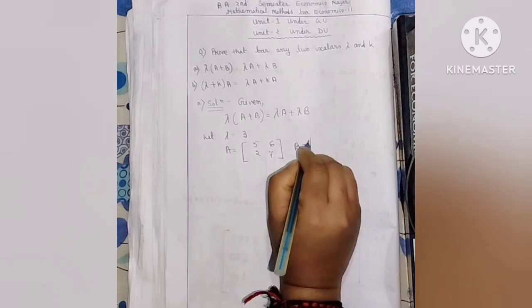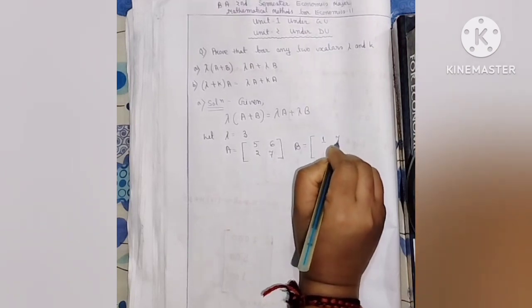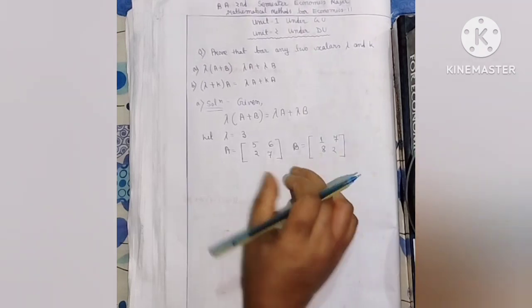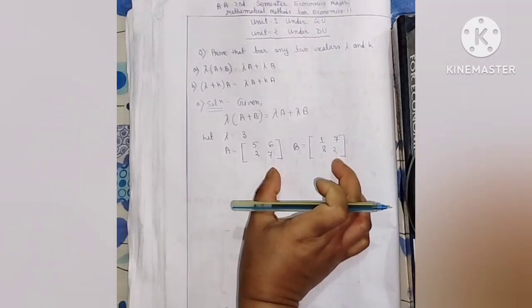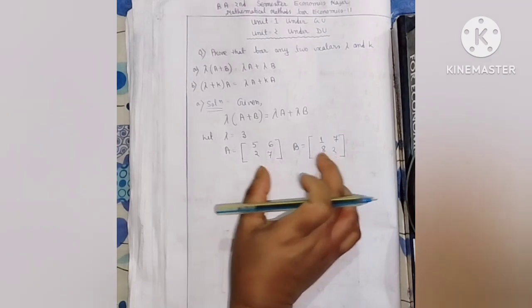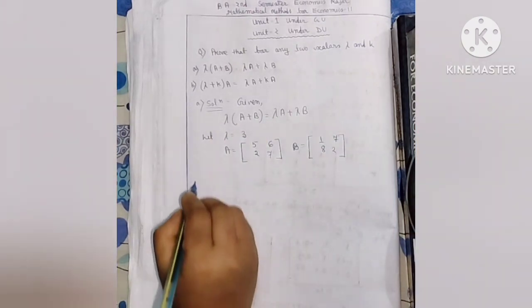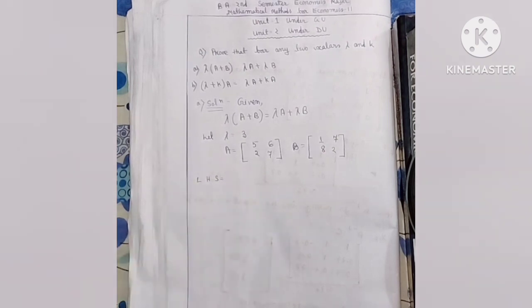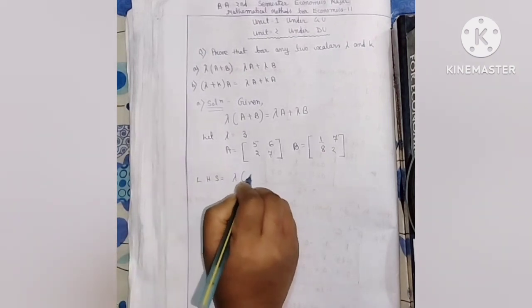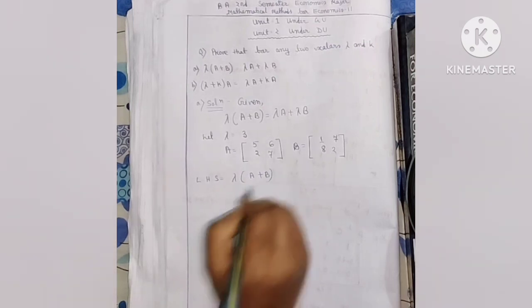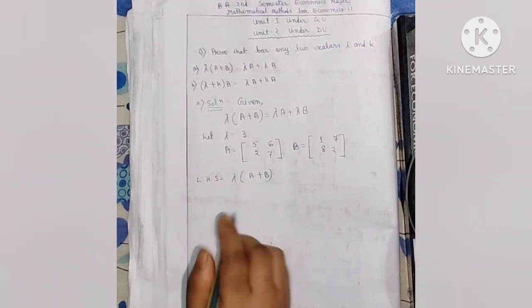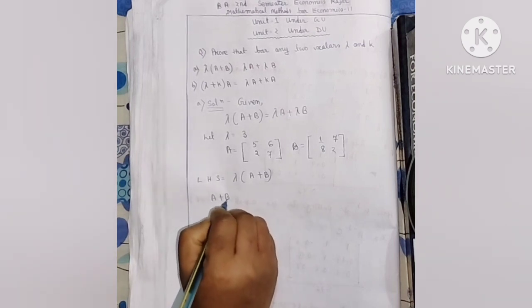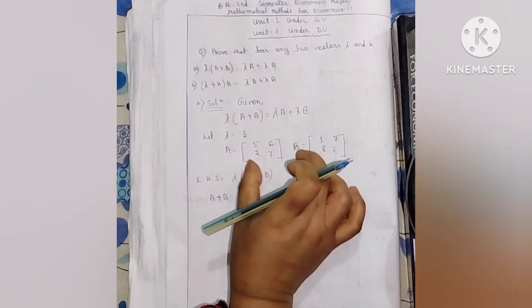I will show you matrix B: 2 into 2 dimension, values 2, 1, 7, 8, and 2. I will show you the left-hand side and the right-hand side. I will show you the left-hand side in the next lecture — that is lambda times A plus B — and then the right-hand side.